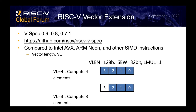You can check out the RISC-V spec from GitHub. The current spec version is 0.9. Compared to Intel AVX, ARM NEON, or other SIMD instructions, RISC-V vector has the vector length (VL), and you can control the number of elements to compute in a vector instruction. For example, this is to compute four elements, and this is to compute three elements.